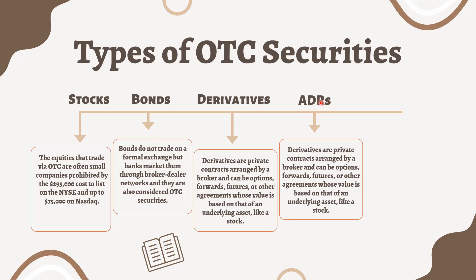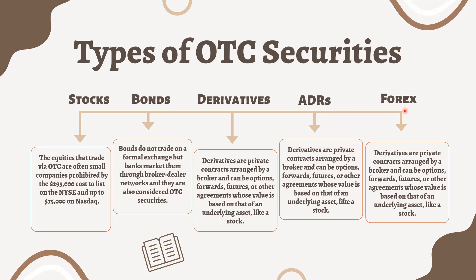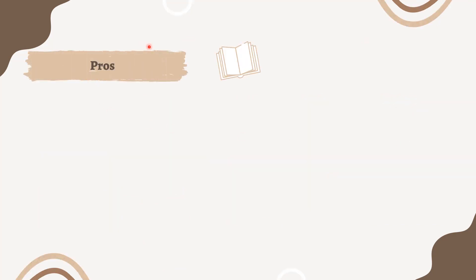American Depository Receipts (ADRs), sometimes called ADSs, are bank certificates that represent a specified number of shares of a foreign stock. Foreign currencies that trade on the forex are also over-the-counter currency exchanges. Cryptocurrencies like Bitcoin and Ethereum trade on the OTC market as well.